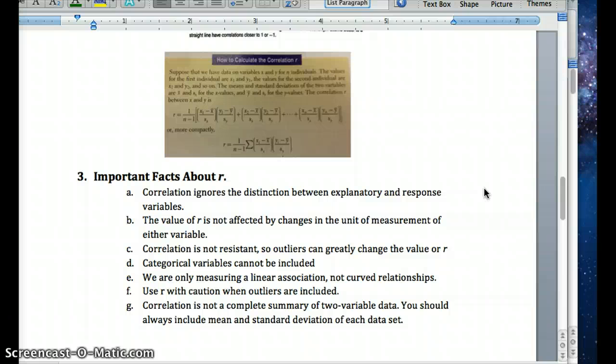Be really careful when there's outliers in a set because it can throw off the value of R by a lot and throw off a best fit line. Correlation also doesn't give you a complete summary, so make sure to include mean and standard deviation of each data set.